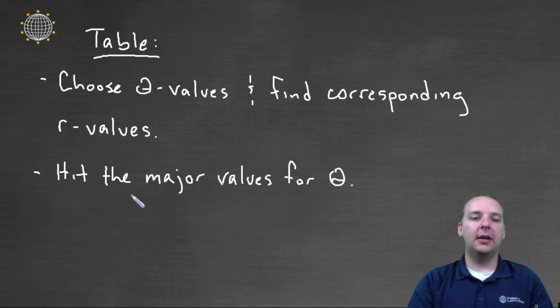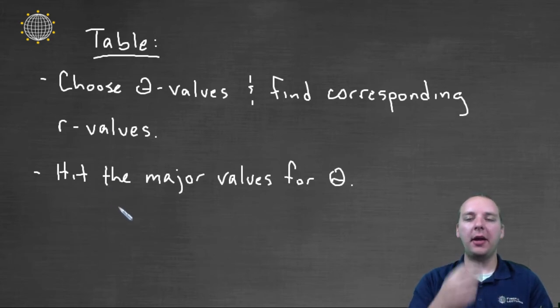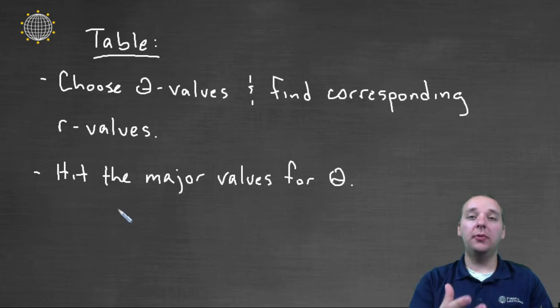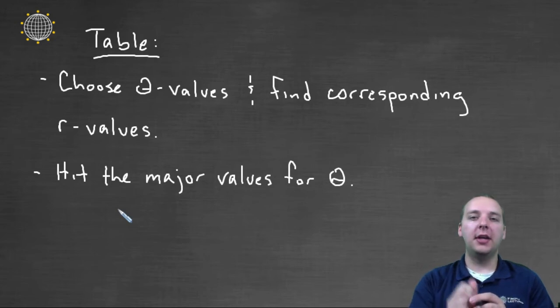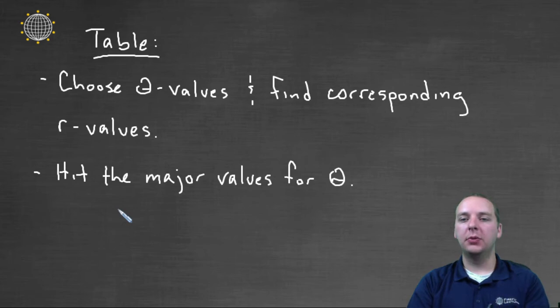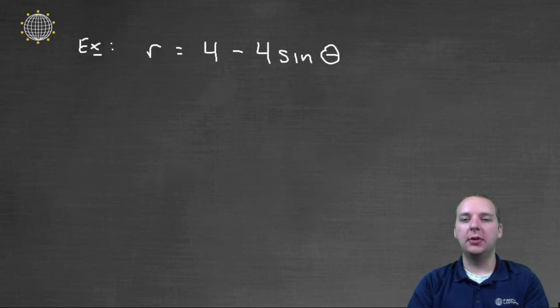Now the second little tip I'll give here, we'll have to clarify this when we actually get into some examples, but you have to make sure to hit the major angles. Because these polar functions will typically have sines and cosines in there, and you want to hit the angles that make sine and cosine be their extreme values like one. So you're stretching out as far as you can at certain angles. So we don't actually just pick these angles at random. But I'll clarify what that means in just a minute.